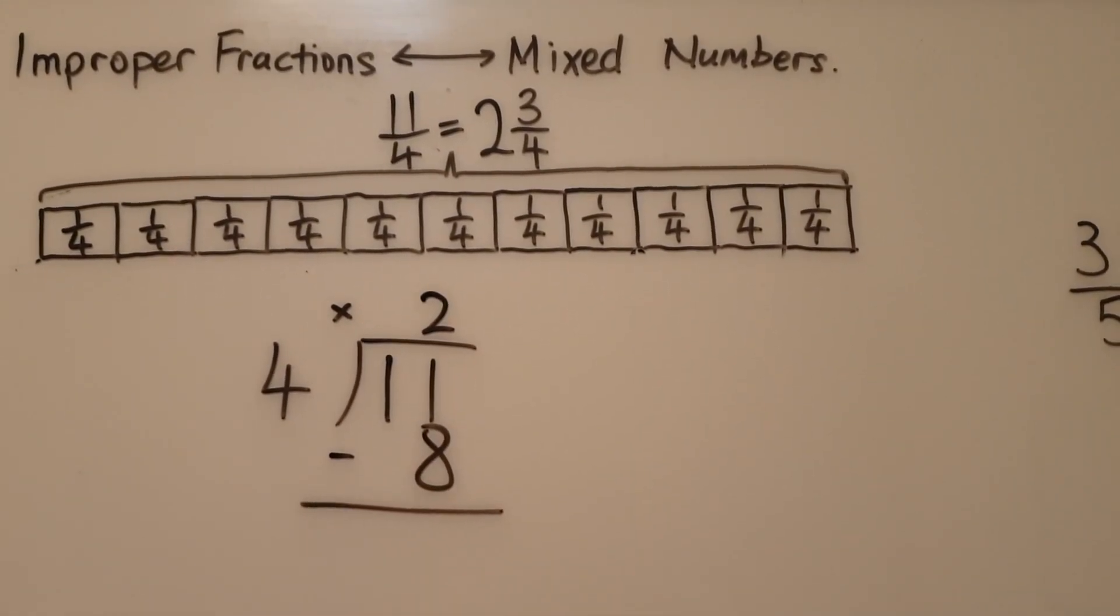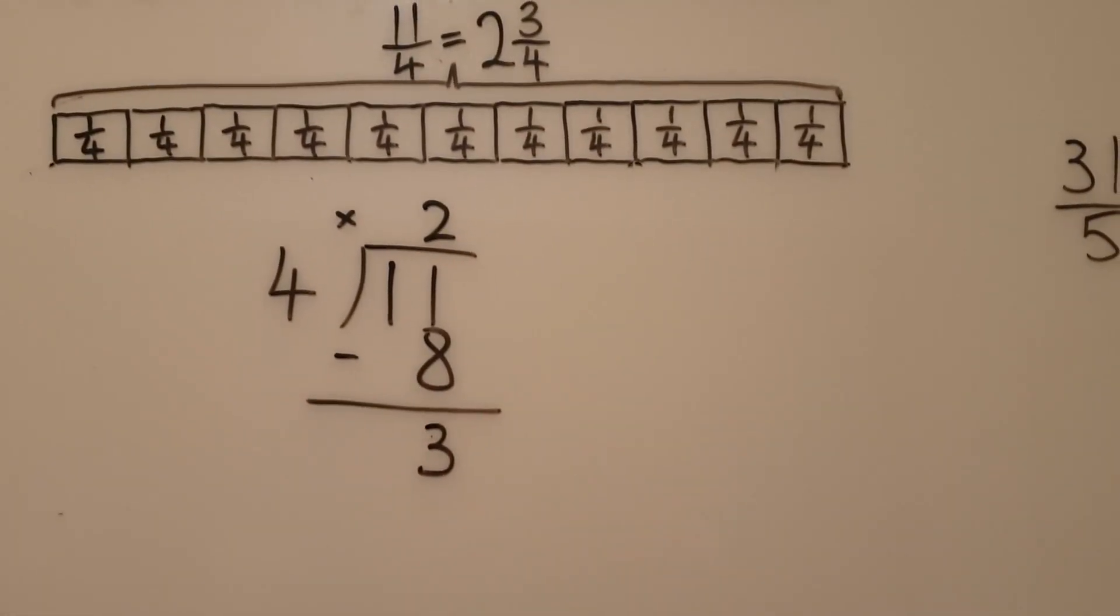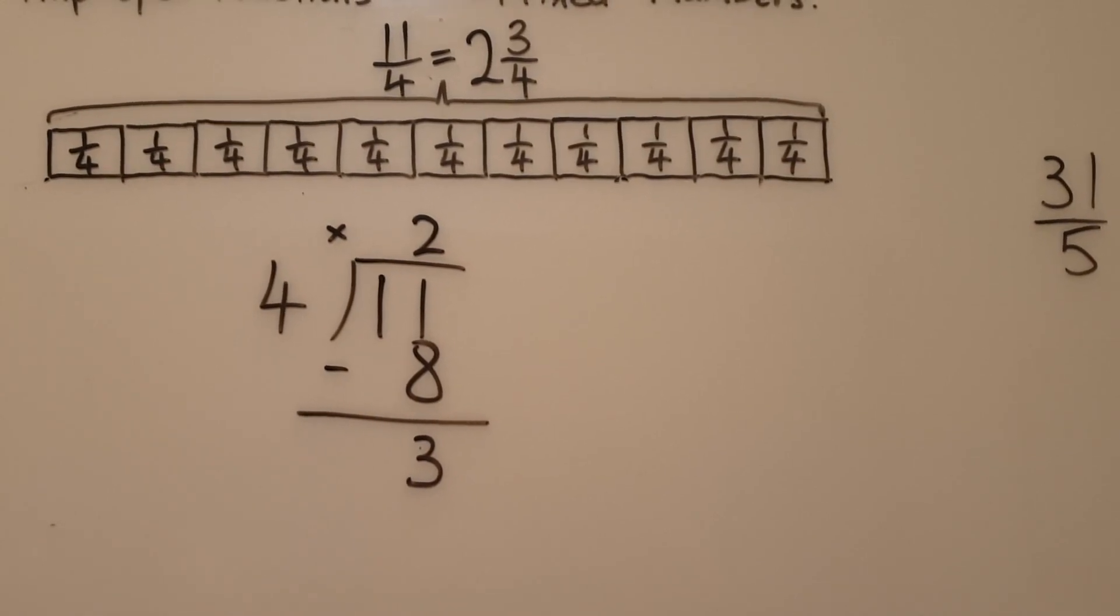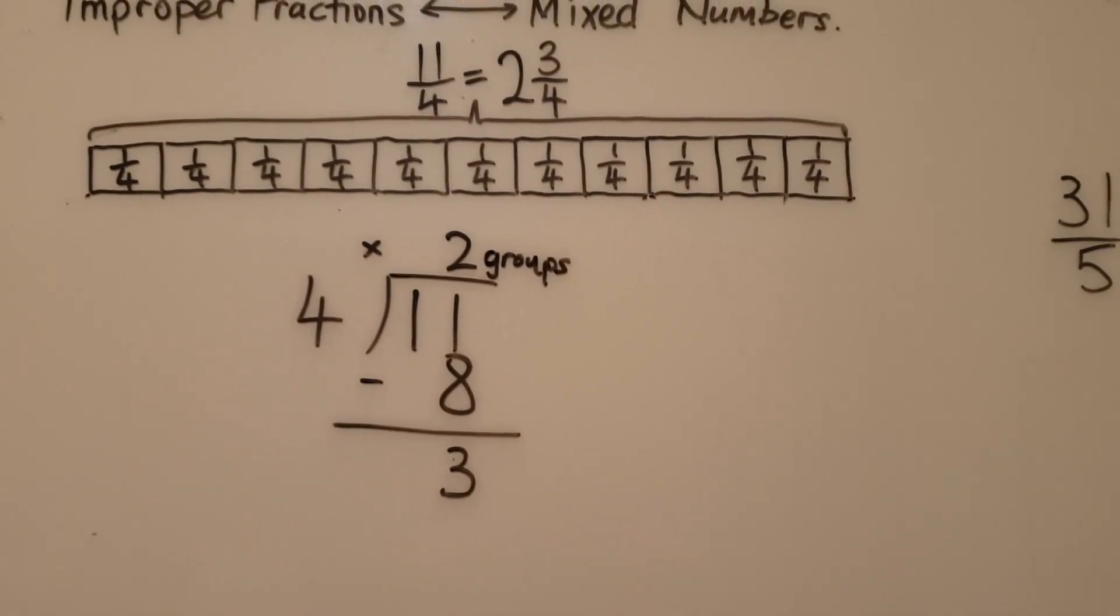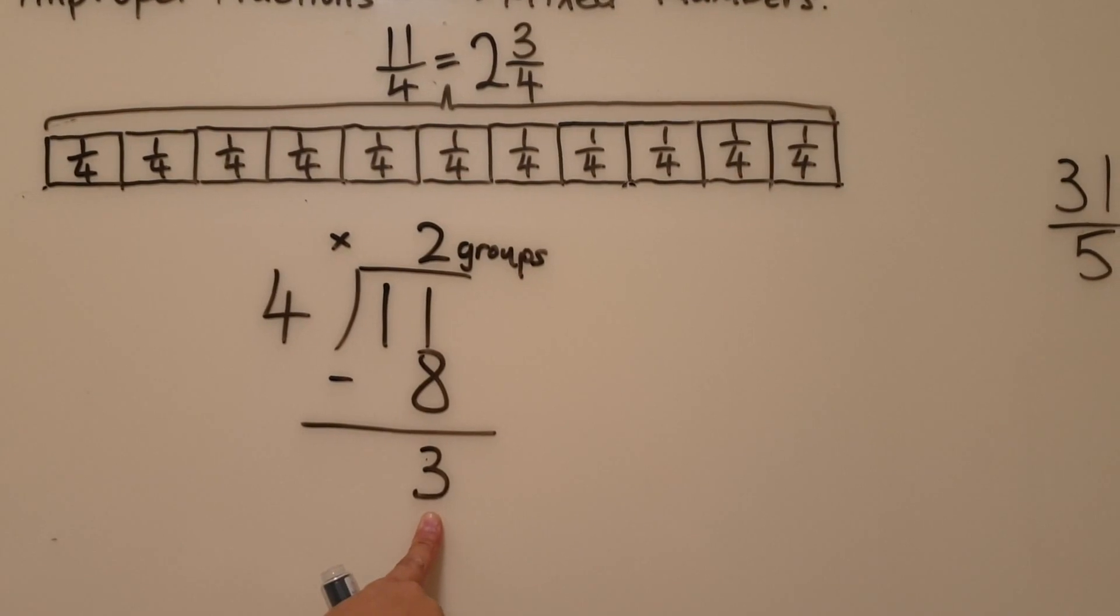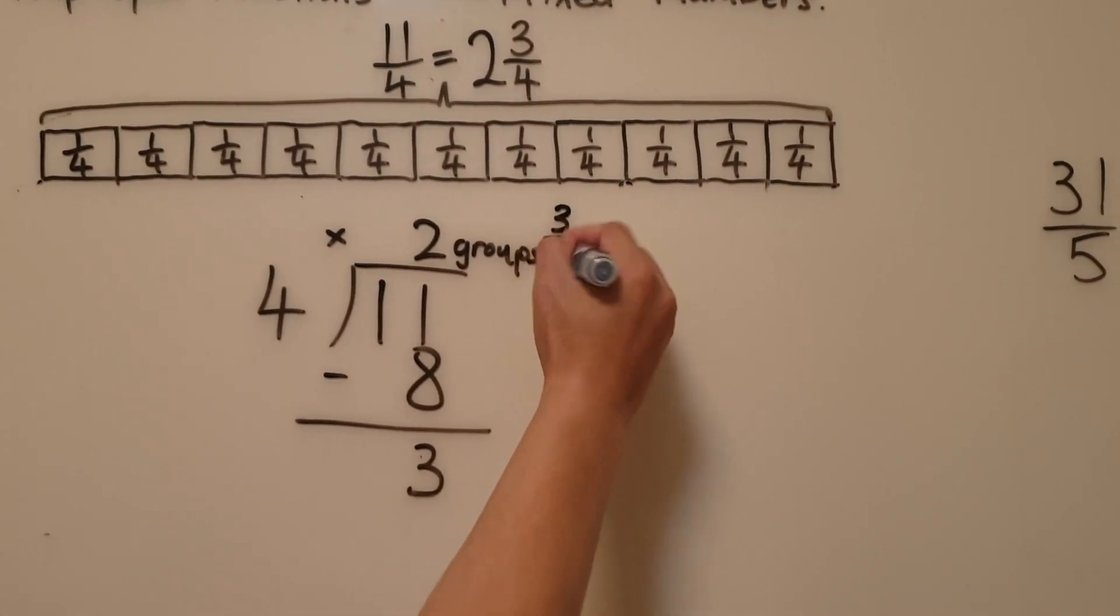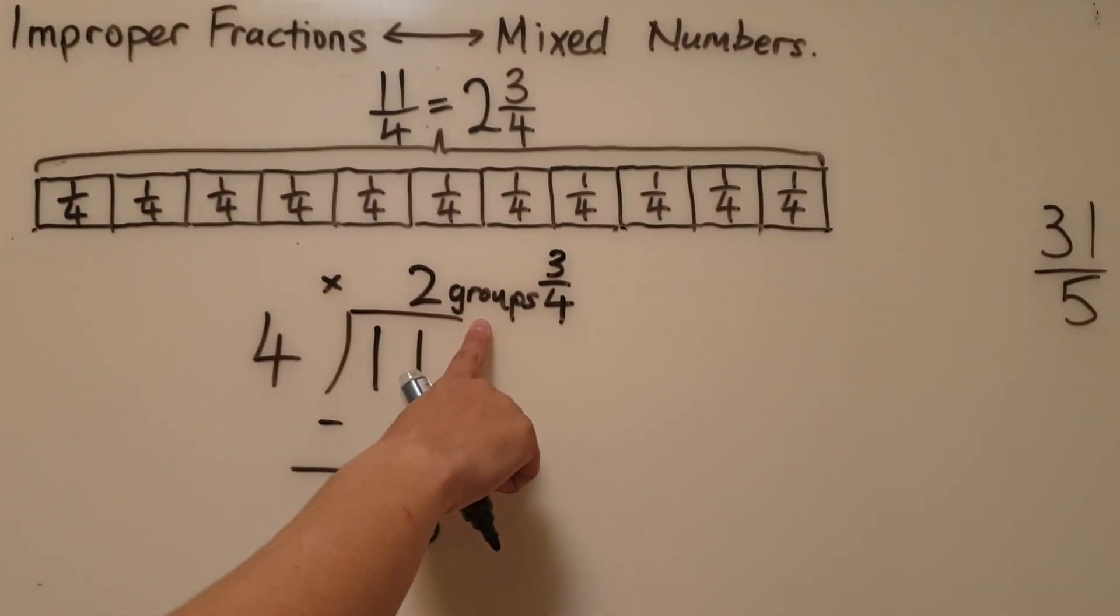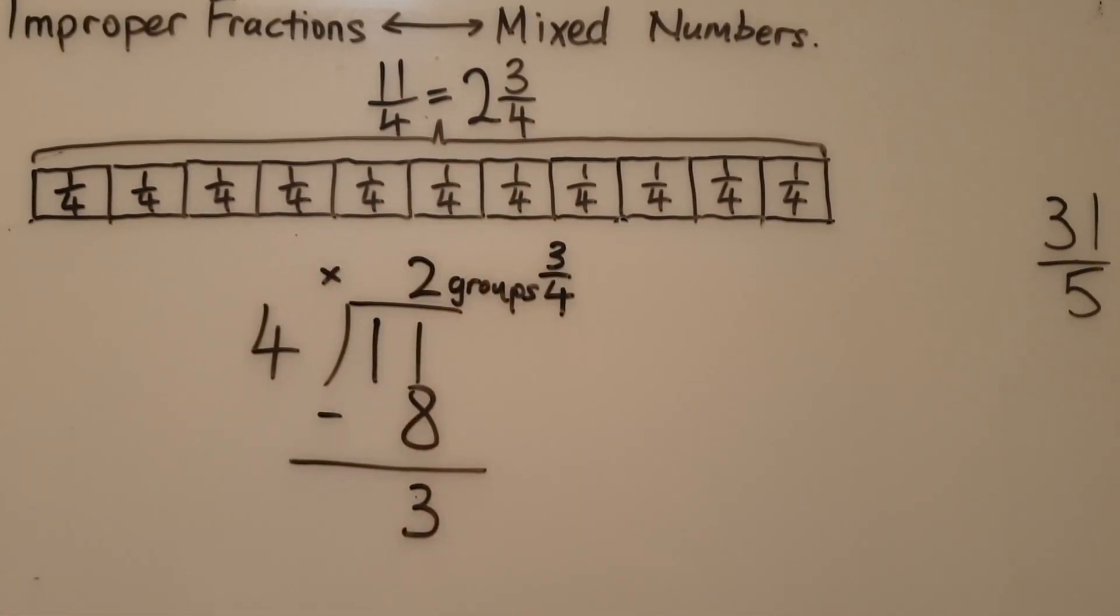What happens after we've grouped the 8 parts? We'll be left with 3 parts left. So what does this working tell us? It tells us that there are 2 groups of 4, and there are 3 parts remaining which are not enough to form a group. So we write this as 3 quarters. So 2 groups of 4, which is in fact 2 wholes, and 3 quarters is exactly the same as the answer which we got above.